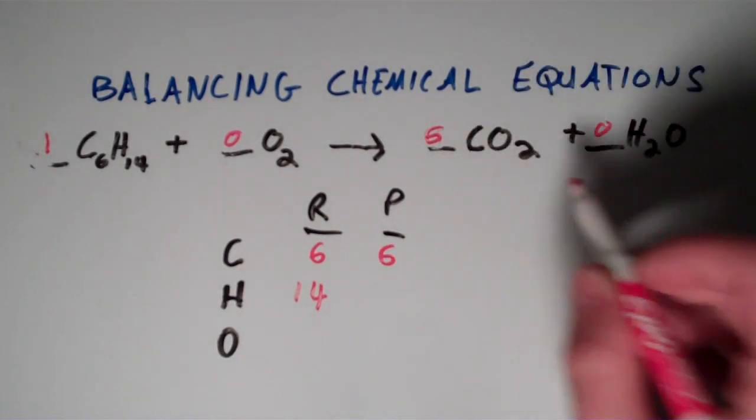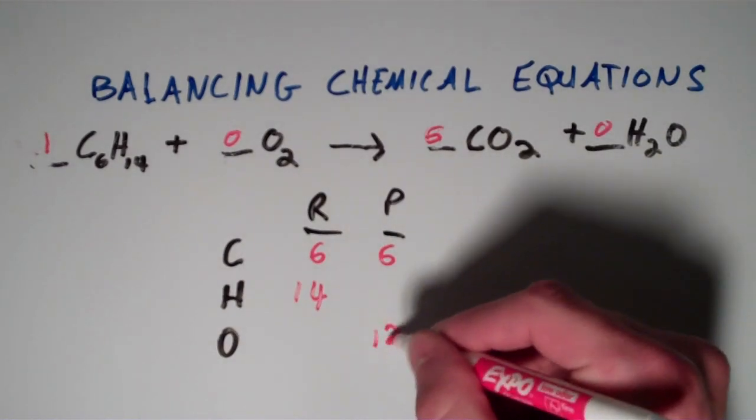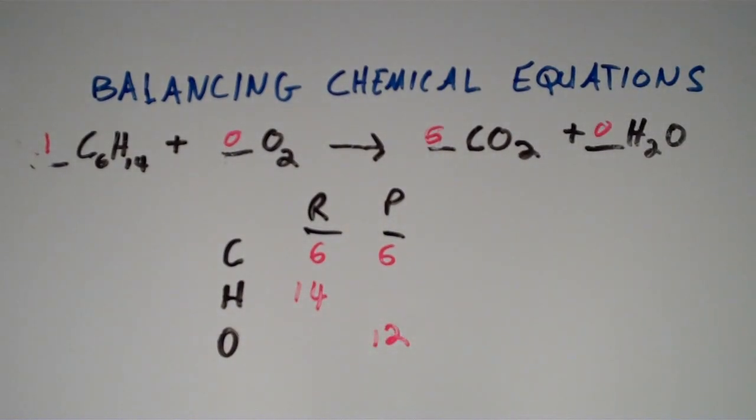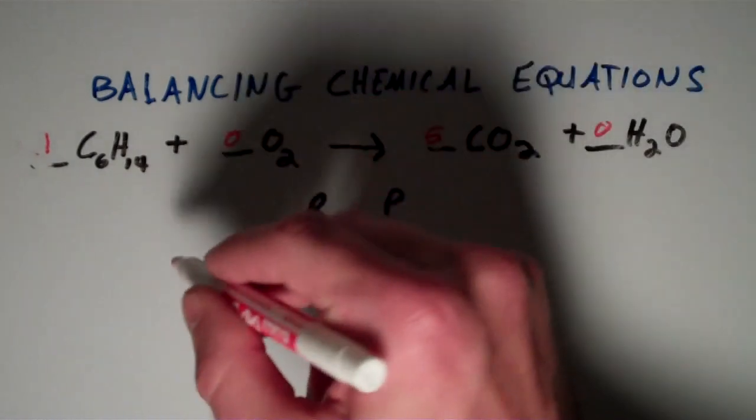and it looks like we have six times two or 12 oxygens on the product side of the equation. So we have just successfully balanced carbon. Carbon's done.